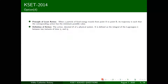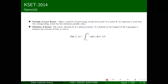When a particle of fixed energy travels from point A to point B, its trajectory is such that the corresponding action has the minimum possible value. The action S is defined as the integral of the Lagrangian L between two instants of time. We're looking for the variation of S to be minimal.